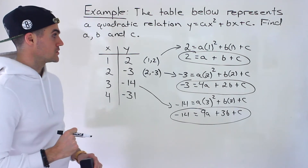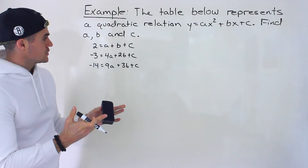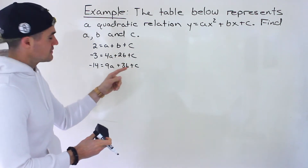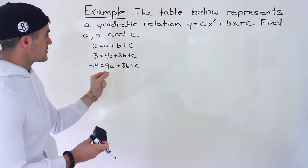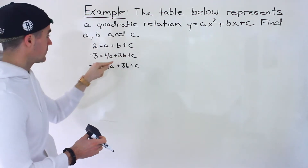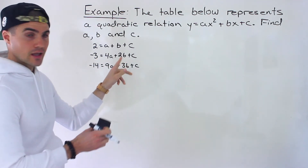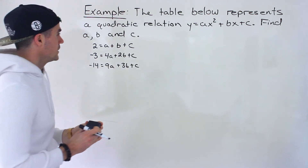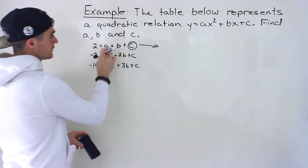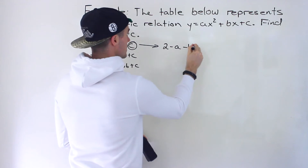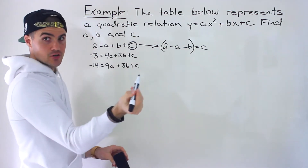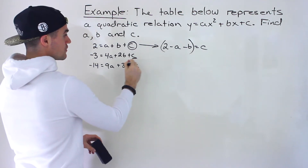From here we could do substitution or elimination. Because these c's are all by themselves, that's the easiest one to work with. I'm going to use substitution — I'll isolate for c in equation one. Bringing the a and b over gives us c equals 2 minus a minus b. Then I'm going to plug in this expression for c into the other equations.